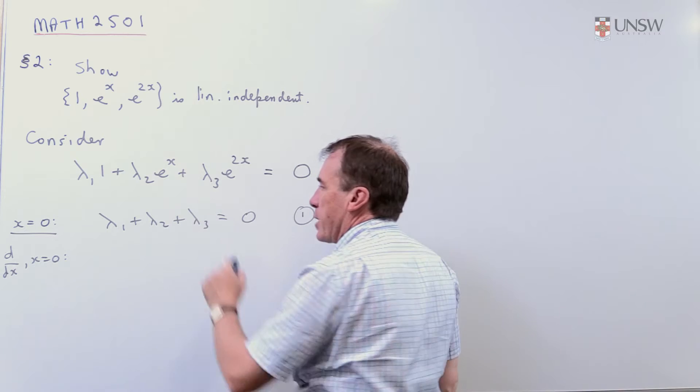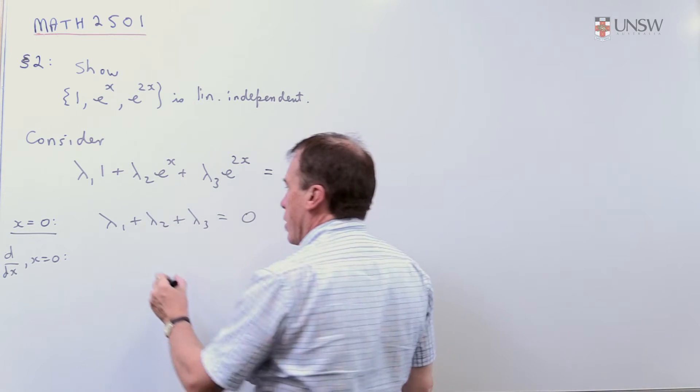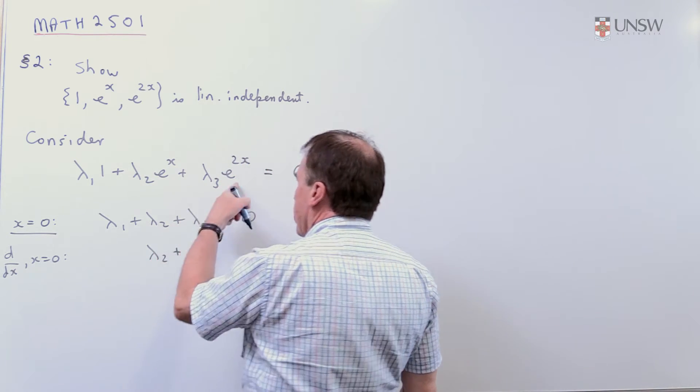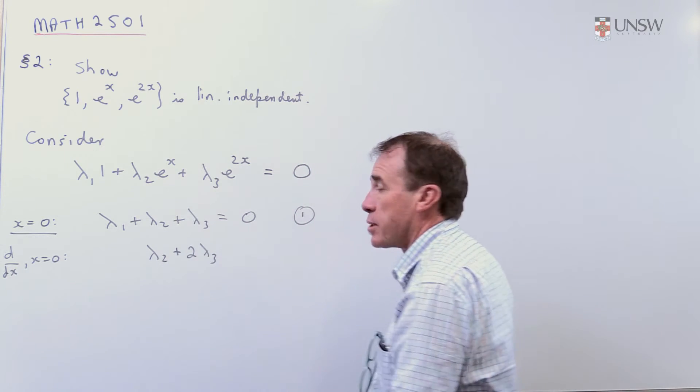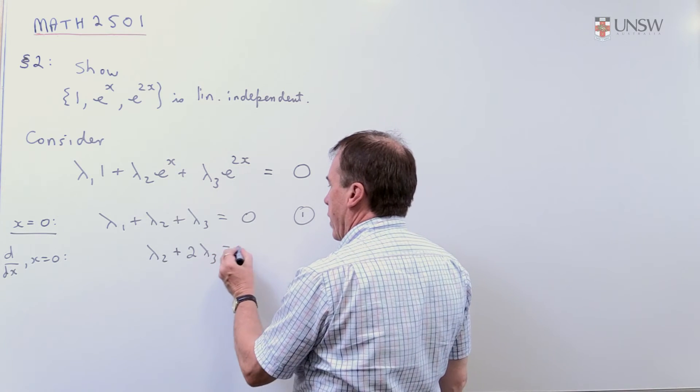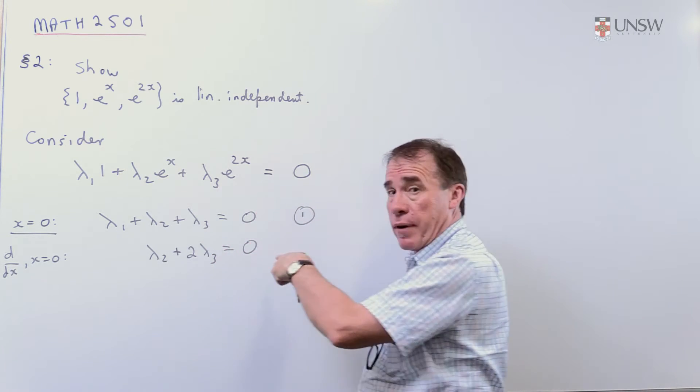So that differentiates to zero. This one differentiates exactly to itself, and put x is zero when I get lambda_2. This differentiates to 2*lambda_3*e^(2x). You put x is zero, you get that. And that's going to be zero.